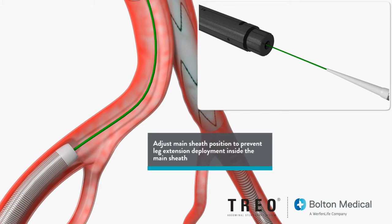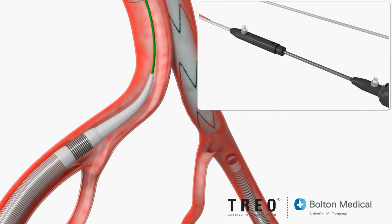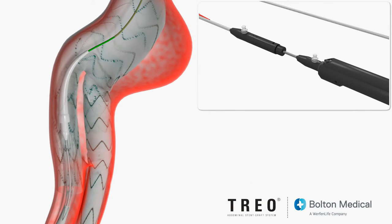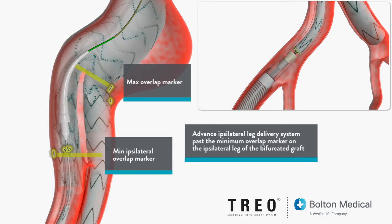If closed, open the hemostasis valve. Insert the leg delivery system through the sheath hub assembly. Leave the hemostasis valve in the open position for the rest of the placement and deployment of the leg extension. While monitoring under fluoroscopy, continue to advance the leg delivery system into the leg of the bifurcated main stent graft, noting the markers on the proximal end.